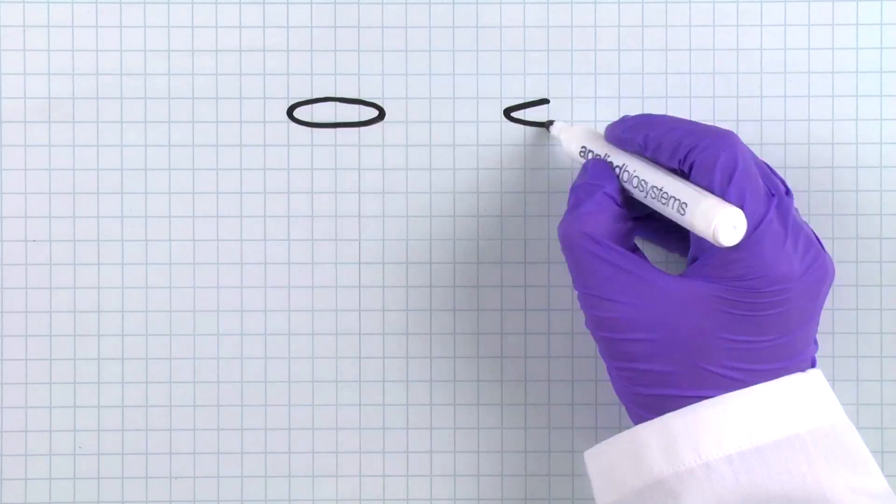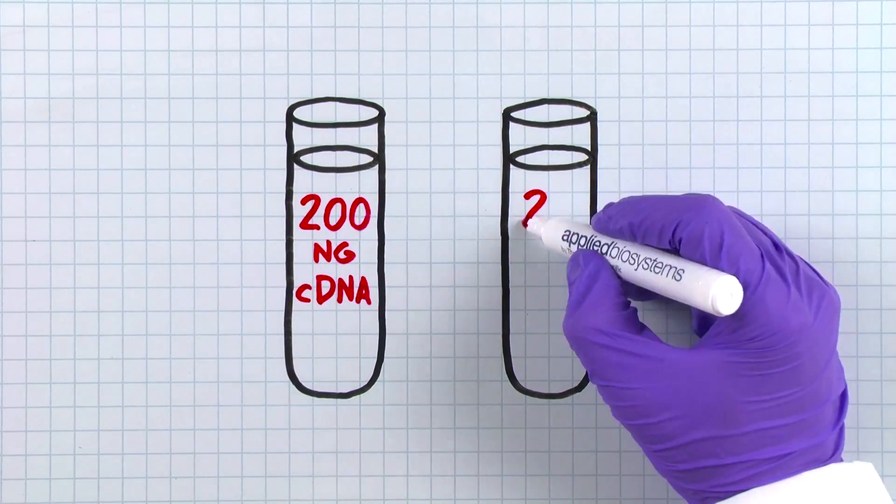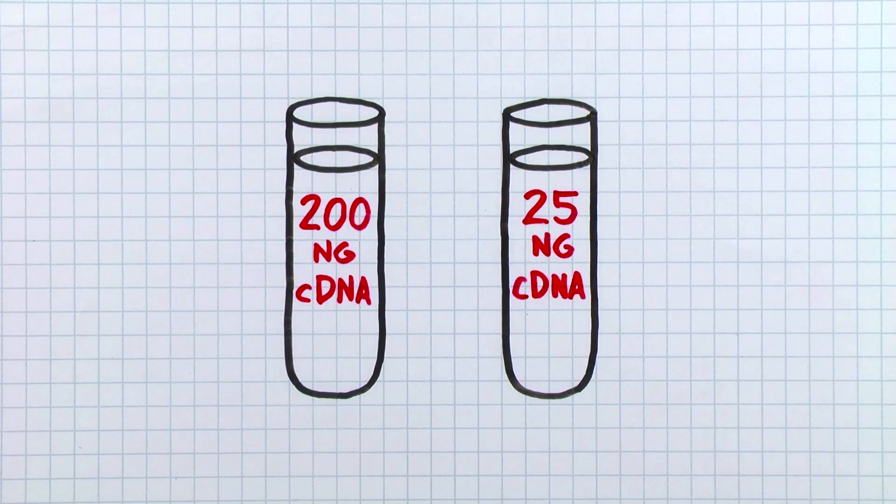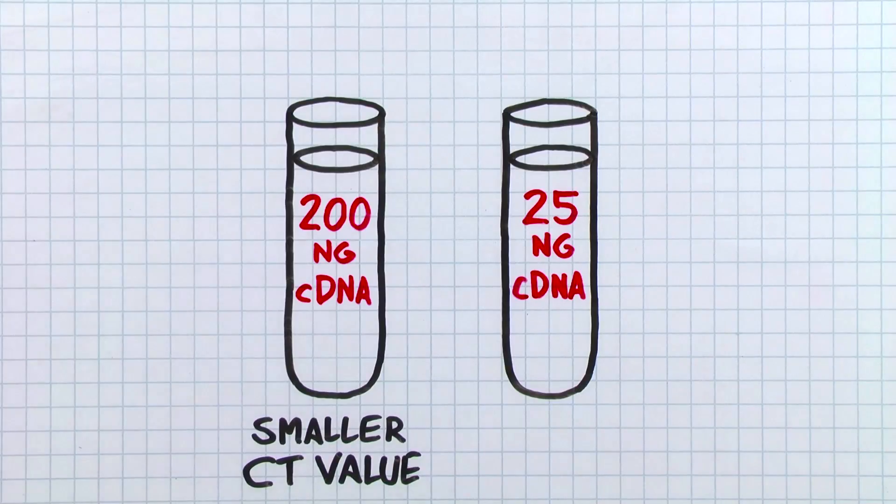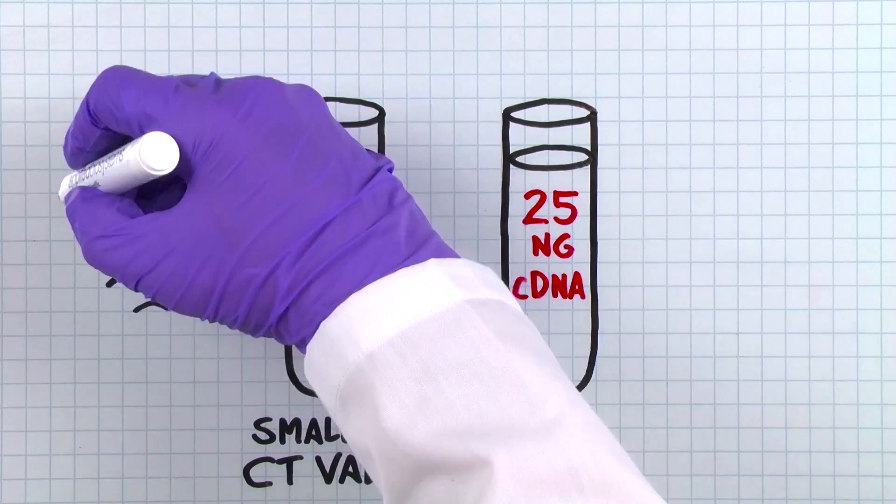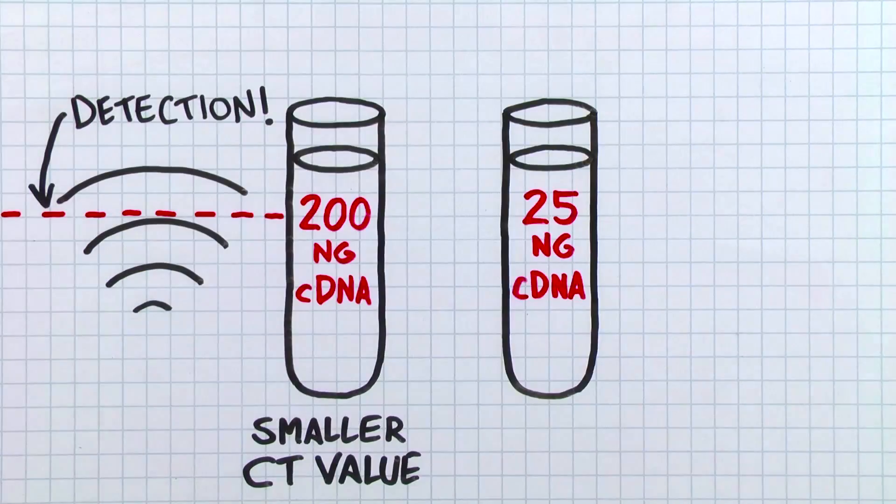For example, if I have two samples, one with 200 nanograms of cDNA and another with 25 nanograms of cDNA, I'll get an earlier CT, or smaller CT value with the first one. This is because it will take fewer PCR cycles for the fluorescent signal to rise above the background for the first sample.